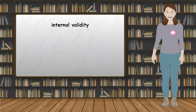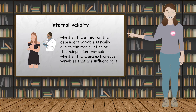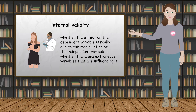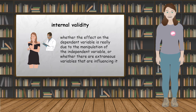Internal validity measures whether the effect on the dependent variable is really due to the manipulation of the independent variable, or whether there are extraneous variables that are influencing it — for example, researcher bias.